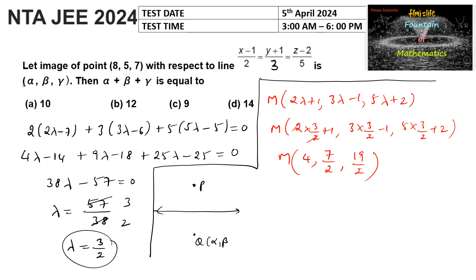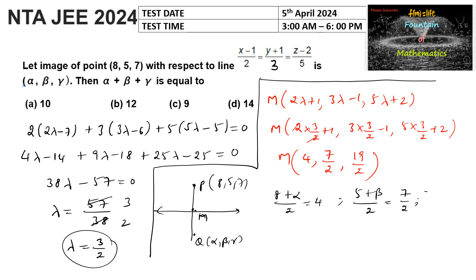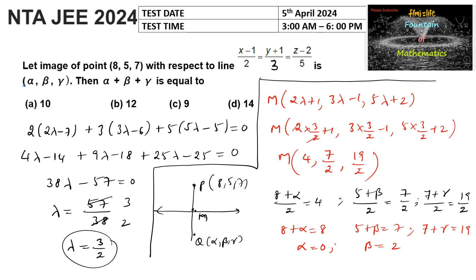Since Q(alpha, beta, gamma) is the image and M is the midpoint of PQ, we use the midpoint formula: (8 + alpha)/2 = 4, (5 + beta)/2 = 7/2, (7 + gamma)/2 = 19/2. Solving: alpha = 0, beta = 2, gamma = 12. So the image is (0, 2, 12).